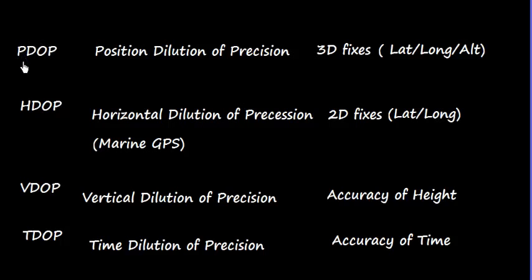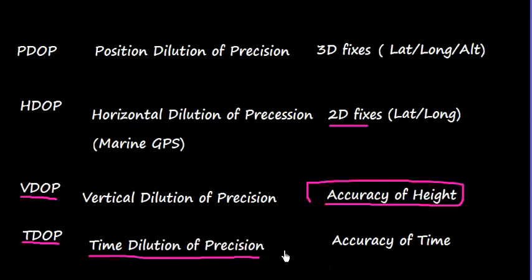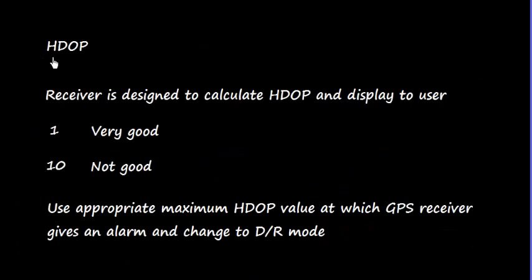We can define PDOP, which is Position Dilution of Precision, required for 3D fixes. There is HDOP, Horizontal Dilution of Precision, which needs 2D fixes. There is VDOP, Vertical Dilution of Precision, that determines the accuracy of height. And there is TDOP, Time Dilution of Precision, which is related to the accuracy of time.